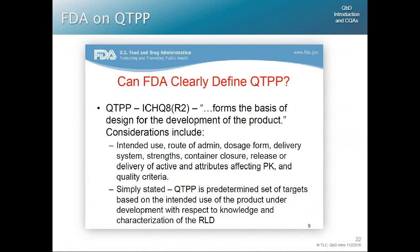In one of the key questions submitted to the FDA, they were asked: can the FDA clearly define what is wanted in a QTPP submission? Their answer referenced ICH Q8 as the basis for design and development. The product should tell them about the intended use, route of administration, dosage and dosage range, delivery systems, strengths, container closures, release or delivery of active, and attributes affecting PK and quality criteria. Simply stated, the QTPP is the predetermined set of targets based on the intended use, with respect to knowledge and characterized use conditions. You can also find submission examples online — Pfizer has one on their website.